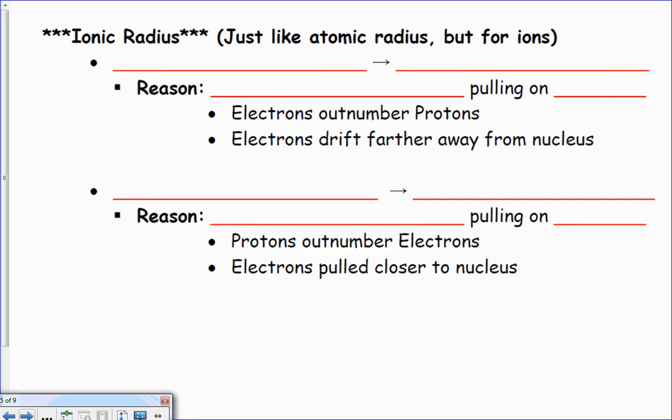Non-metals gain electrons, so if I gain electrons my radius is going to increase. I have more things, right? And the reason is because I have the same nuclear charge, the same amount of protons, but I'm pulling on more electrons, so my ratio of pull to electrons goes down.